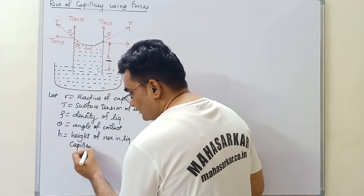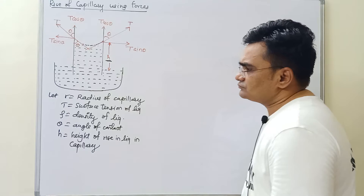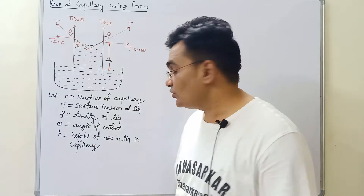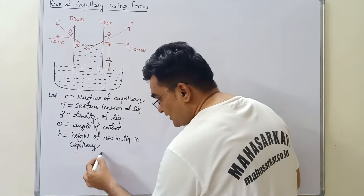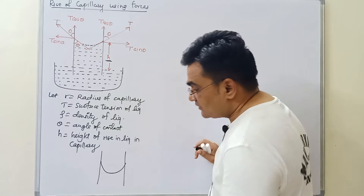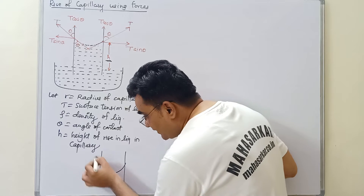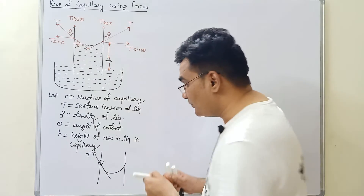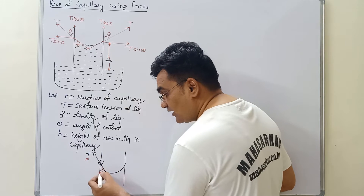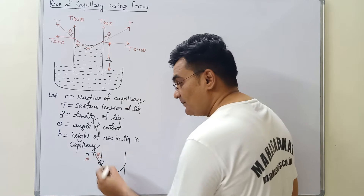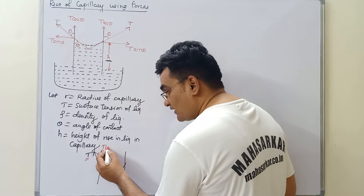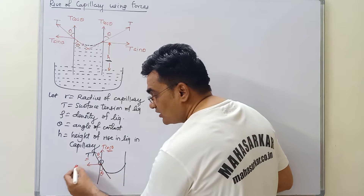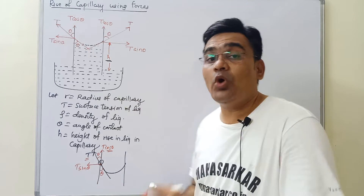Now, the liquid has a concave surface, so the angle of contact theta is acute. If we redraw this: the tangent to the surface gives the direction of the surface tension force T. This force T is resolved into two components — T cos theta along the vertical direction, and T sin theta perpendicular to it (horizontal). This analysis applies at one wall of the capillary.